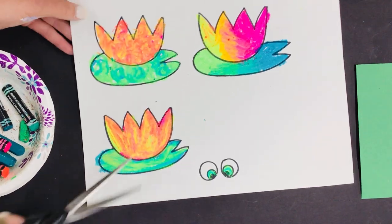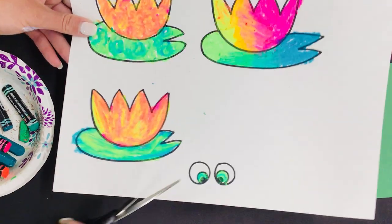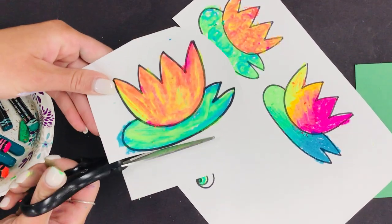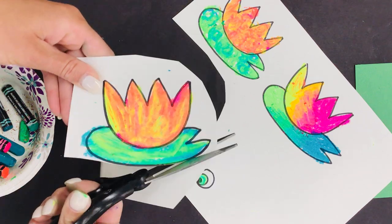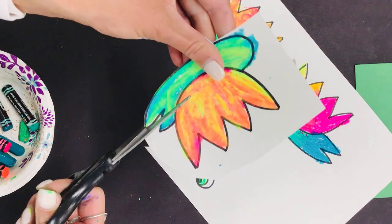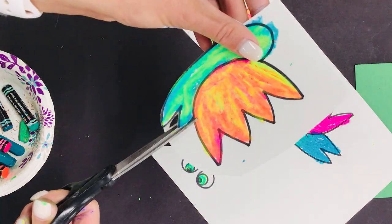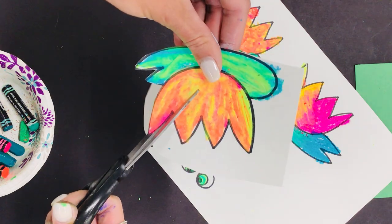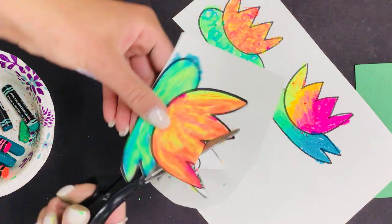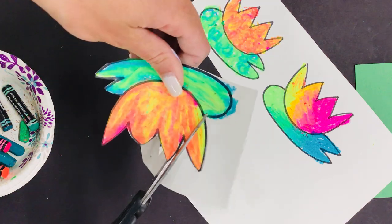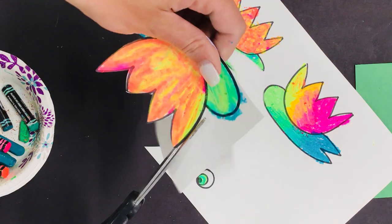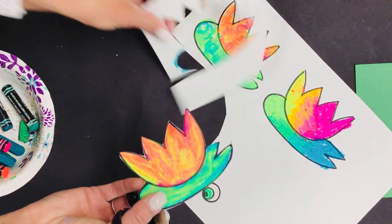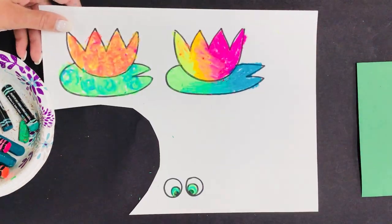So our next step we're gonna cut out our lily pads and our eyes. And a trick to make this easier for you is to first kind of cut out around it. And then you can actually move your paper. See my scissors are staying still. If you just move your paper around that is a little helpful tip. And if there's some white paper left after you are done cutting that's okay because we're still practicing. So you're gonna cut out all your lily pads and your frogs eyes.